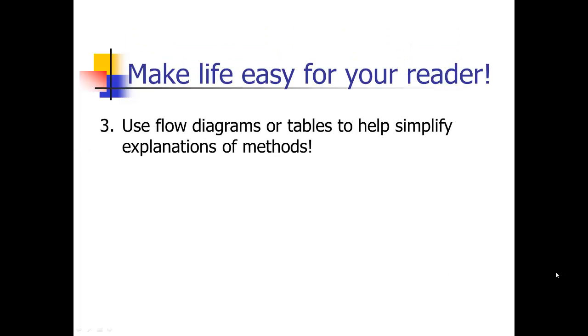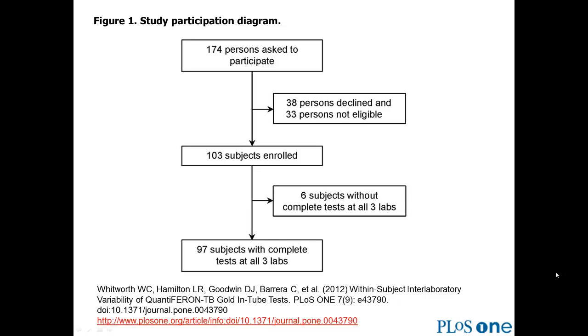Another way to make life easy for your readers is to use flow diagrams or tables to help simplify the explanation of methods. So a very common thing that people will do is if you've got like a clinical study and you've got participants flowing through your study, you might do a participant flow diagram like this. 174 persons were asked to participate. Here's how many actually enrolled. Here's what happened to them. So you can see that information like this, it's really easy to glean off of a diagram like this. Really hard to get if you tried to write that in text.